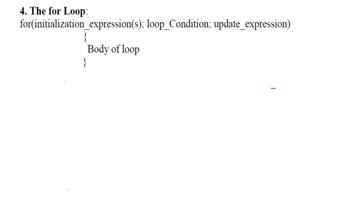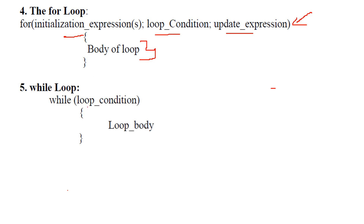The for loop is an elegant entry-controlled loop where initialization, the loop condition, and the update expression (increment/decrement) are all written in one line. The loop body statements are written inside the braces. The while loop is also an entry-controlled loop — the loop condition is written at the top, the initialization is written above the while loop, and the update is done somewhere inside the loop body.